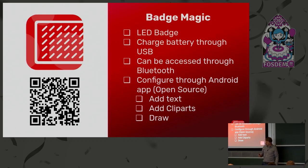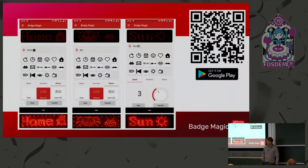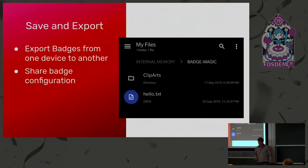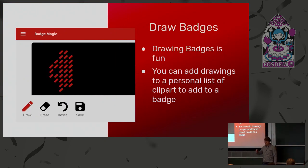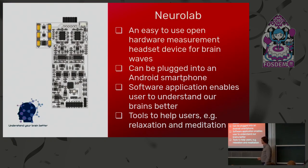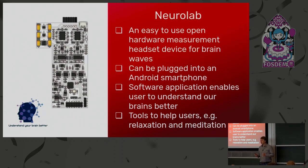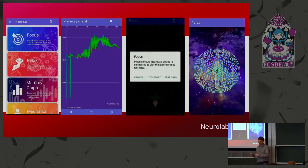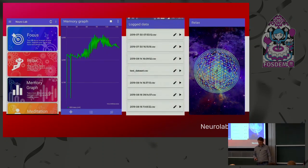Another thing we are doing is this badge — it's not open yet but we are working on it. The first step was that there was a guy on the internet who reverse engineered the protocol, and based on his hack we were able to do an open source app. You can save and export clips and draw on the badge. The third project is the Neural Lab — similar to Open BCI and Braindreno — basically you collect your brain waves and analyze them for focus or relaxation.